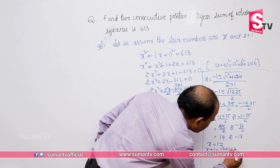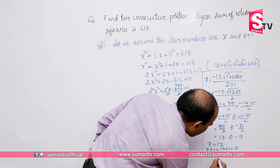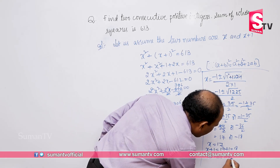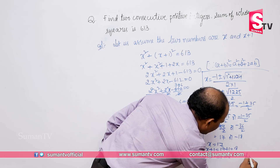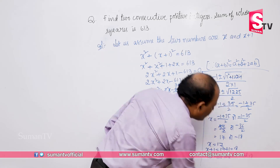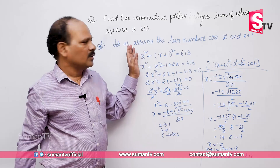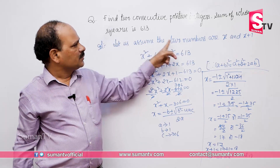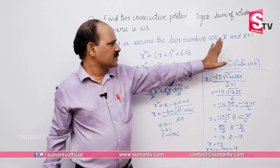So X equals 17, and the next number X plus 1 equals 17 plus 1, which is 18. The two consecutive positive numbers are 17 and 18.